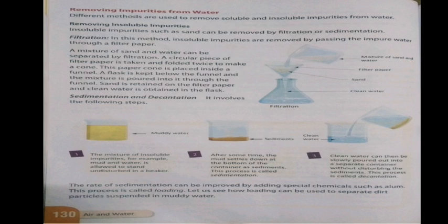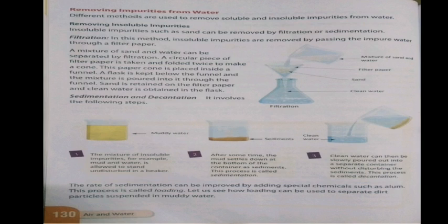In the sedimentation and decantation process, the mixture of insoluble impurities (e.g., mud and water) is allowed to stand undisturbed in a beaker. After some time, the mud settles at the bottom as sediment — this is called sedimentation. The clear water is then slowly poured into a separate container without disturbing the sediments — this is called decantation. The rate of sedimentation can be improved by adding chemicals such as alum, a process called loading.